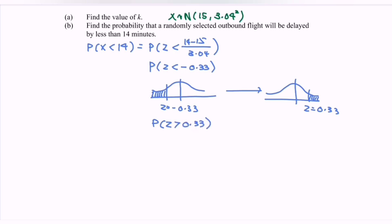From here, refer to the statistical table, and we have the answer. Probability that X less than 14 is equal to 0.3707.